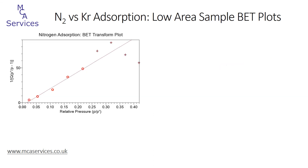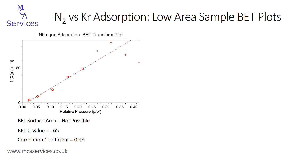Looking at the BET transform plots of each isotherm and the resulting BET surface area data, we can see that for nitrogen adsorption it's not possible to generate reliable data. Even using just the lowest five relative pressure data points, shown as the red circles, the BET C value is negative and the correlation coefficient is very poor. If we were to use only the lowest two relative pressure data points we could obtain a positive C value of 625 and a perfect correlation coefficient, but in this case the BET surface area is calculated to be 0.027 square meters per gram and must only be considered completely unreliable.